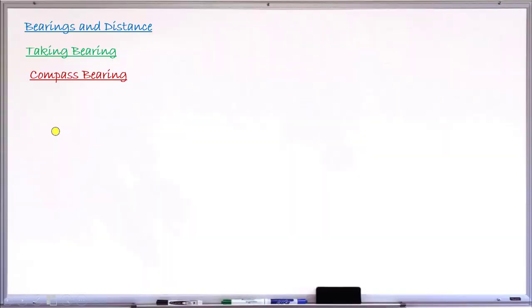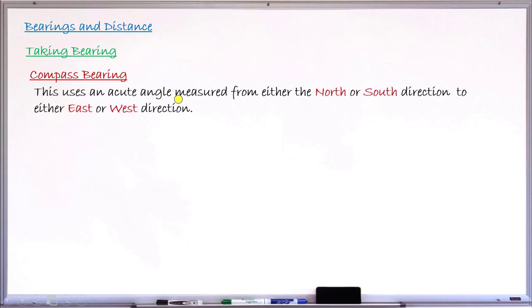To begin the lesson, let me explain the second type of bearing — that is the compressed bearing. The compressed bearing uses an acute angle, and that acute angle is measured from either the line pointing north or the line pointing south, and that angle is then measured towards the east direction or the west direction — that is, from each of these lines pointing north or south, the angle is measured to the right or to the left.